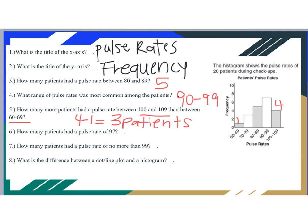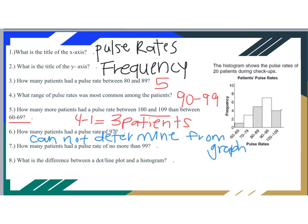How many patients had a pulse rate of 97? We look at the graph — 97 falls between 90 and 99, and we know there are a total of 7 people in that range, but we have no idea how many had exactly 97. So this cannot be determined from the graph, because histograms show a range.